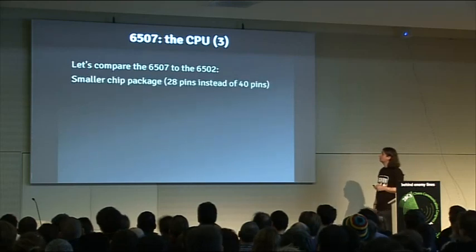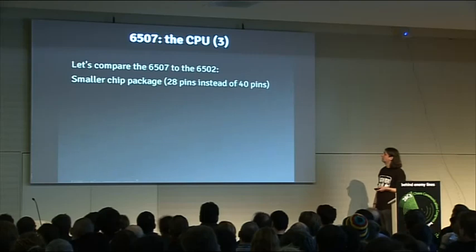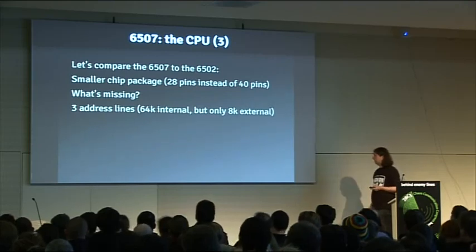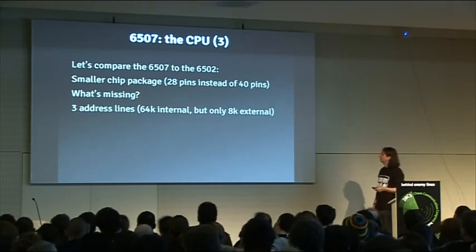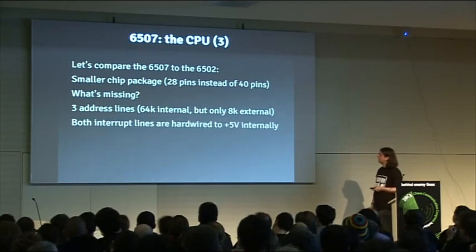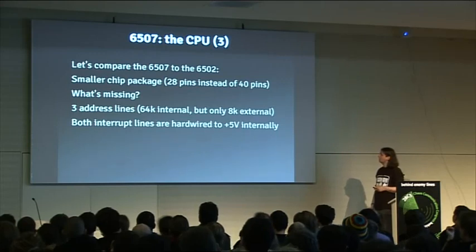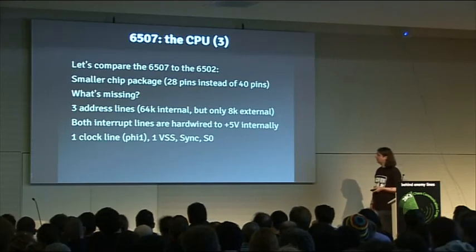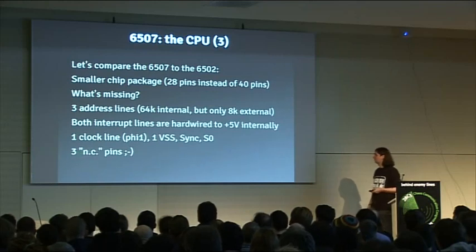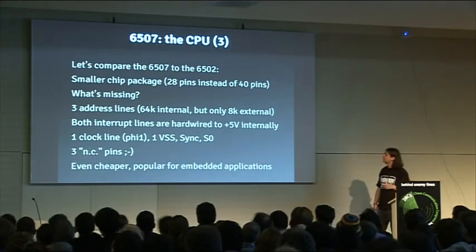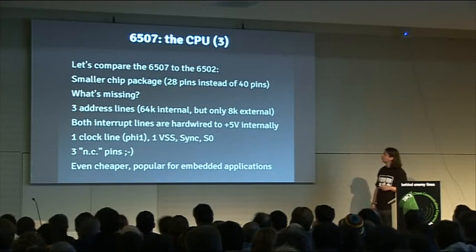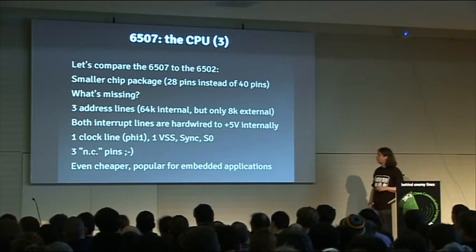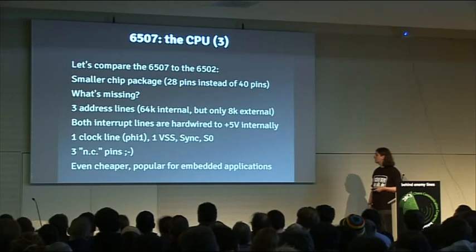What's different about the 6507? It has a smaller chip package. What's missing? Three address lines — so instead of the 64K, you've got only 8K that you can address; all the others are mirrors. Both interrupt lines have been completely disabled. There are four other non-essential pins missing, and three non-connected pins are missing as well. This smaller chip package was one of the main cost factors back then, so it was even cheaper to produce than the 6502 and was very popular for embedded applications like washing machines.